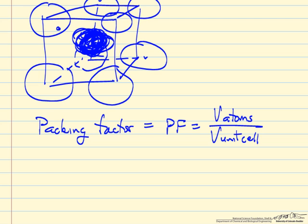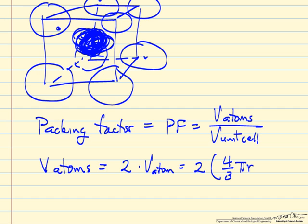So the volume of the atoms is going to be the number of atoms, which is 2, explaining why that is, times the volume of an atom, the volume of one atom. So it's a sphere, so 4/3πr³, where r now is the radius of an atom.